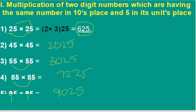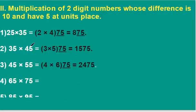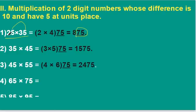For this type of numbers we have to follow this trick where the unit digit is 5 and the difference between the two numbers is 10. The last two digits of our answer are 75. We have to multiply 2 into the next number of 3, that is 4. Therefore 2 into 4 is 8, and last two digits are 75, so our answer is 875.